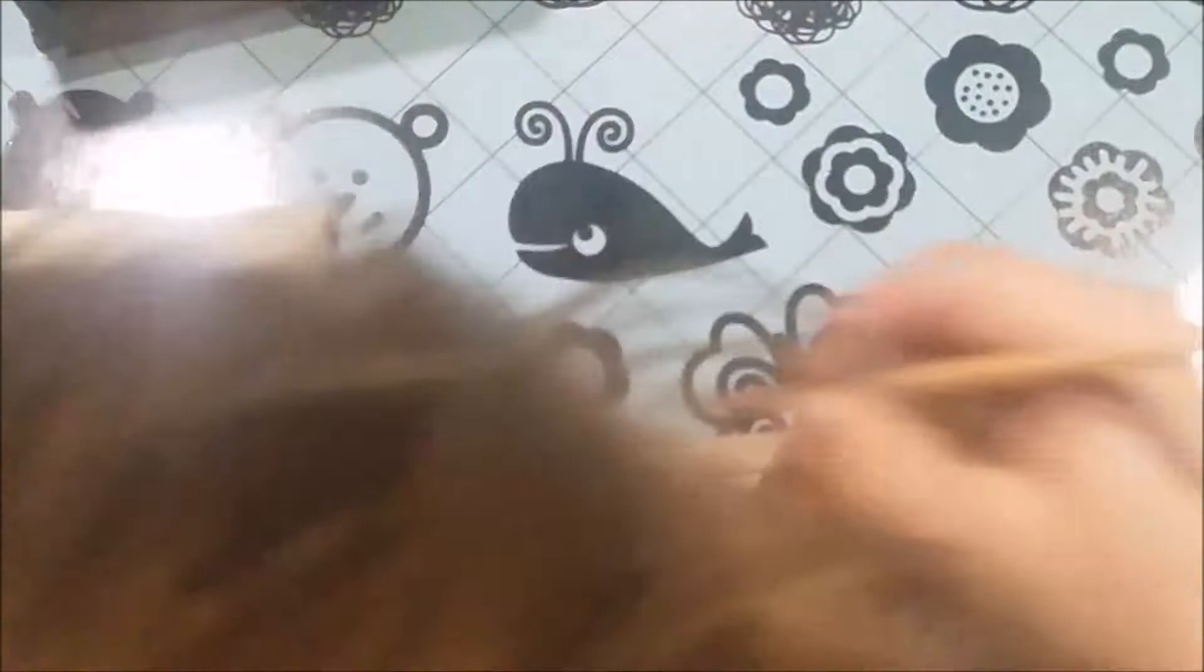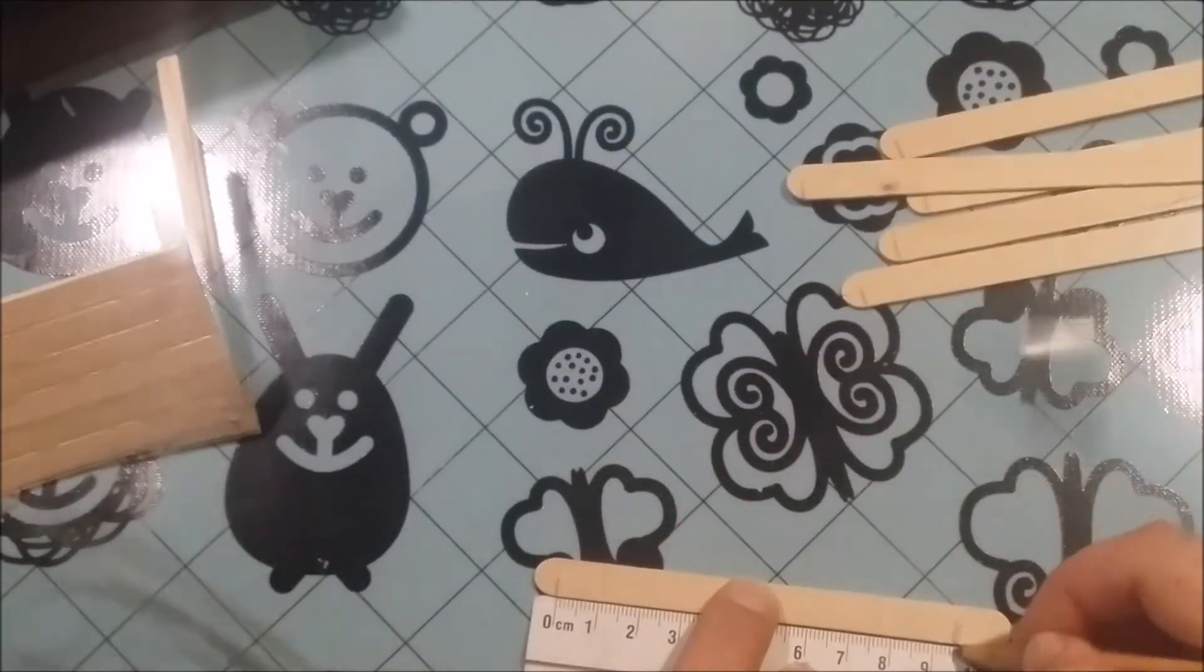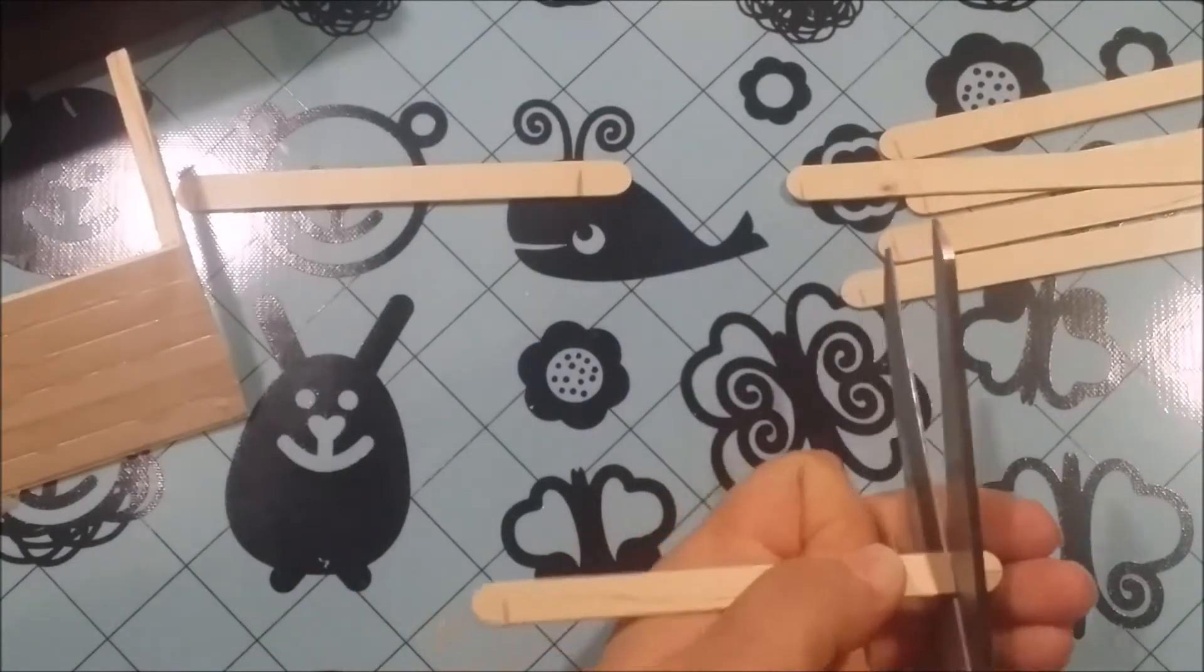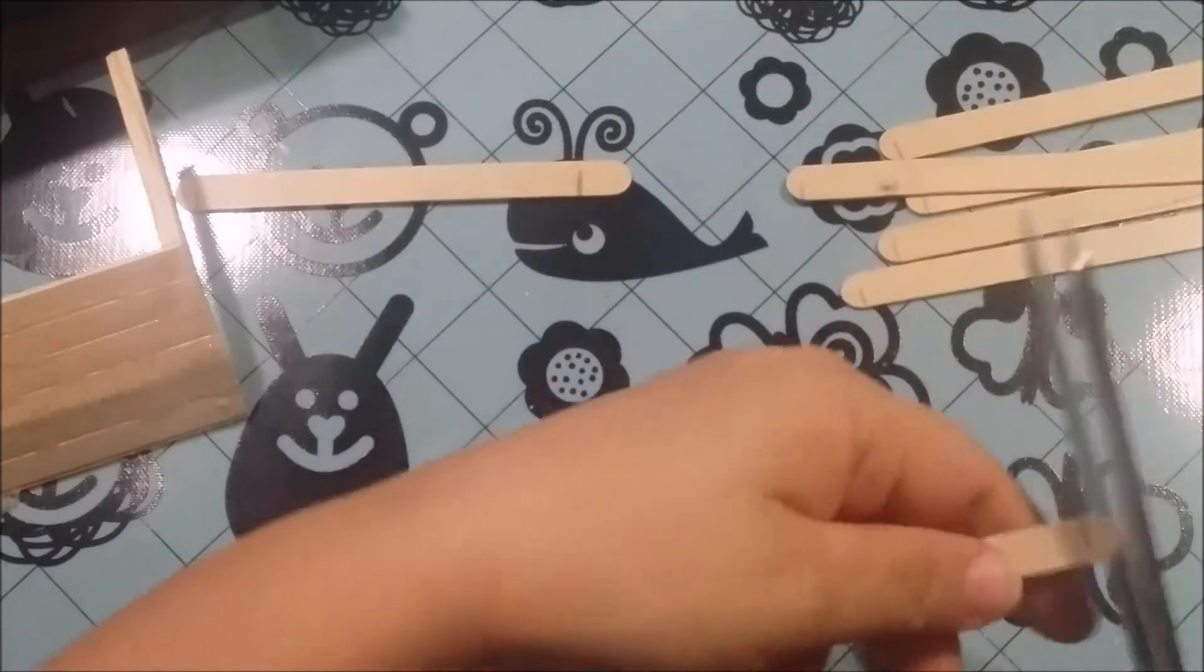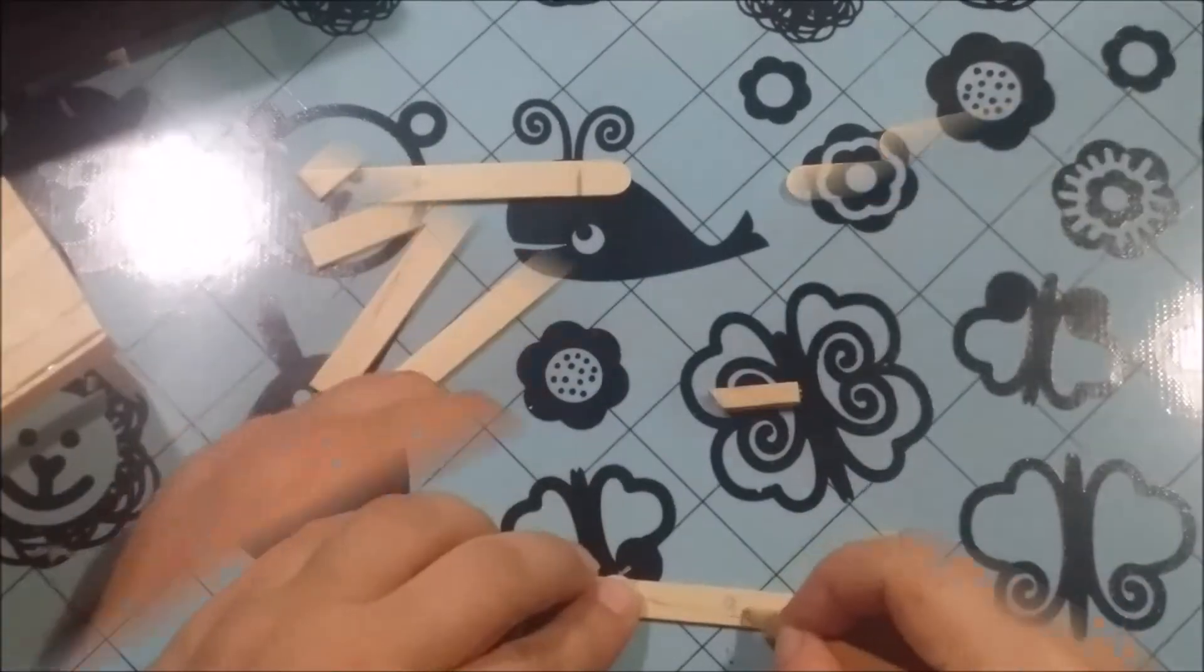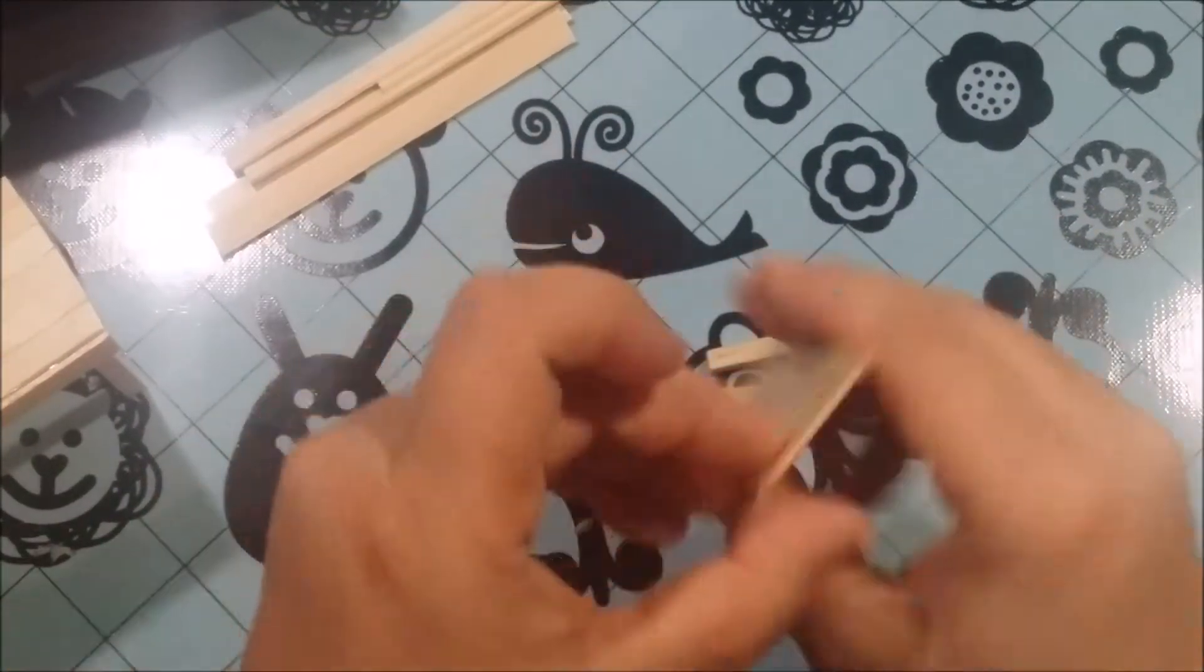Here I'm just measuring out five popsicle sticks to ten and a half centimeters that's going to become the back wall. And I'm also measuring out two pieces to nine and a half centimeters that's going to become the shelves in the back of the store. And I'm just writing on them to know which ones are which.